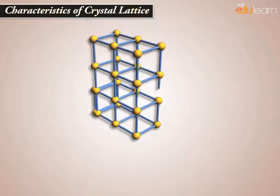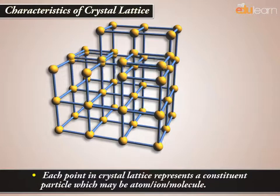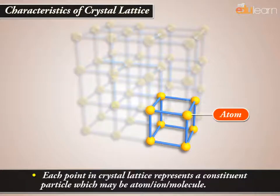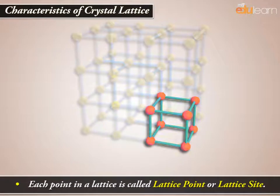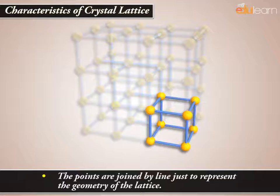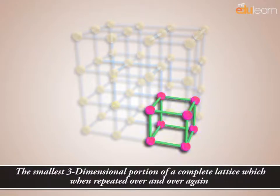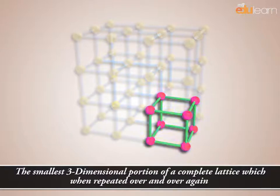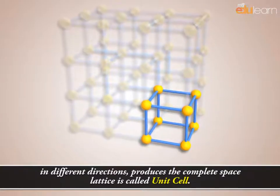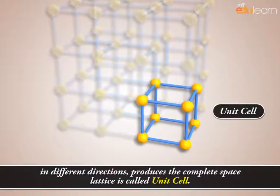Characteristics of Crystal Lattice: Each point in the crystal lattice represents a constituent particle, which may be an atom, ion, or molecule. Each point in a lattice is called a lattice point or lattice site. The points are joined by lines just to represent the geometry of the lattice. The smallest three-dimensional portion of a complete lattice which, when repeated over and over again in different directions, produces the complete space lattice is called a unit cell.